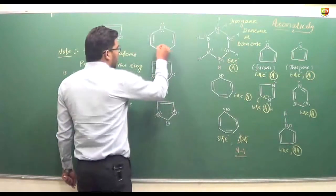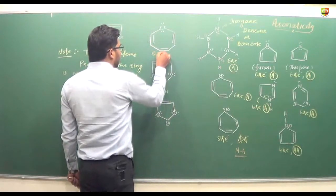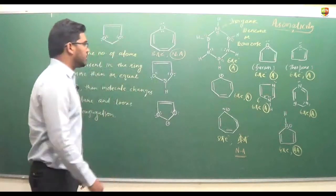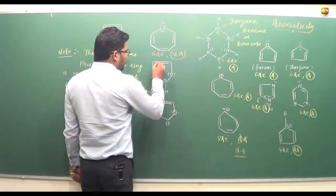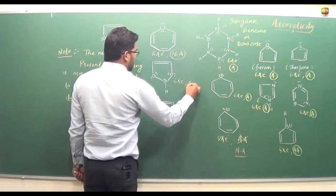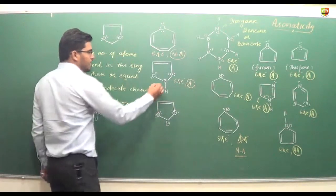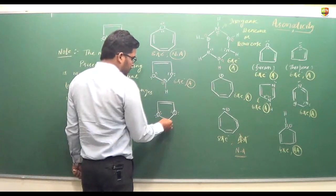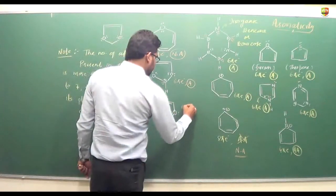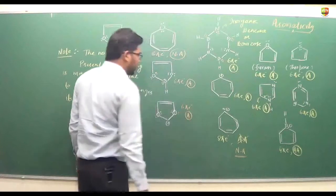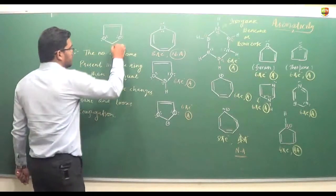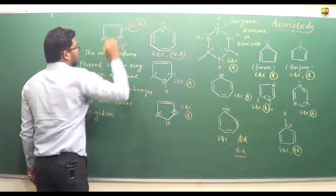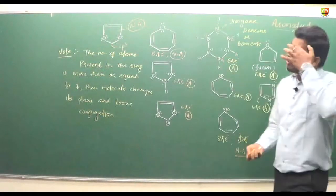Similarly, this molecule has 8 pi electrons but is non-aromatic because it has 7 atoms. Here we have 1, 2, 3 — 6 pi electrons — and the molecule is aromatic; boron has a vacant p orbital, so resonance is possible. This compound has a positive charge on carbon: 2, 4, 6 pi electrons — aromatic in nature, with conjugation present. But here this carbon atom is sp3, so the molecule is non-aromatic.